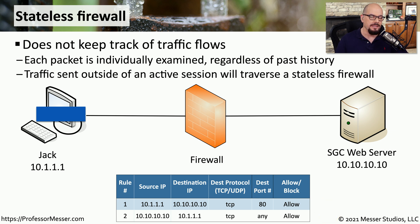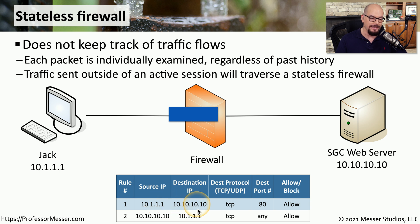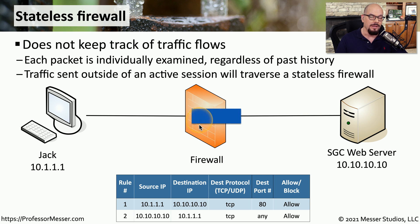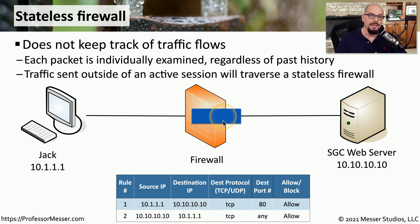Let's test the rules in this stateless firewall. We'll begin with Jack communicating to the web server. The firewall evaluates that traffic as 10.1.1.1 communicating to 10.10.10.10, sees that the information is allowed if that's TCP port 80 — and in this case it is — so that traffic is allowed through. The SGC web server responds and sends the information back to the firewall. But since this is stateless, the firewall has no idea this is a response to that earlier request, so it looks into its rule base again and sees a rule that allows traffic from 10.10.10.10 to 10.1.1.1. Since that is allowed, the information continues to Jack's workstation.